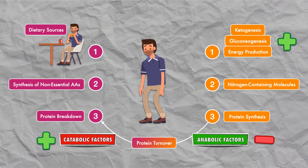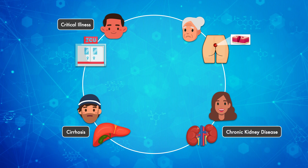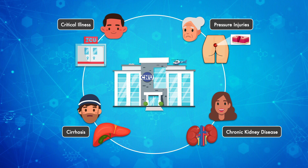In many disease states, we see a tremendous slowing down of protein synthesis and an acceleration of protein breakdown, pushing the balance of protein turnover decisively in favor of protein breakdown and decreased functionality. Later in this series, we're going to explore medical conditions like critical illness, cirrhosis, chronic kidney disease, and pressure injuries.